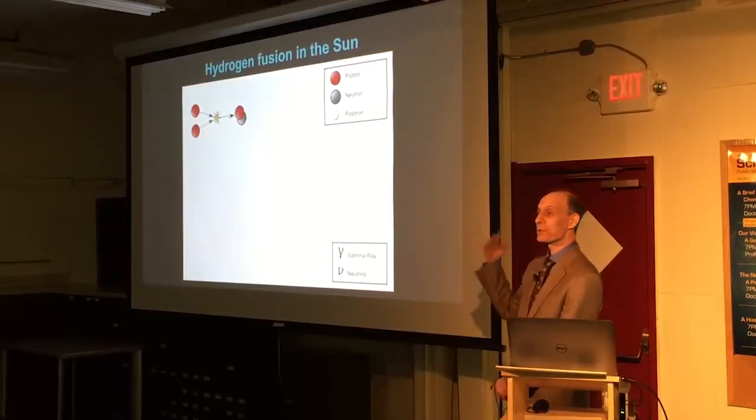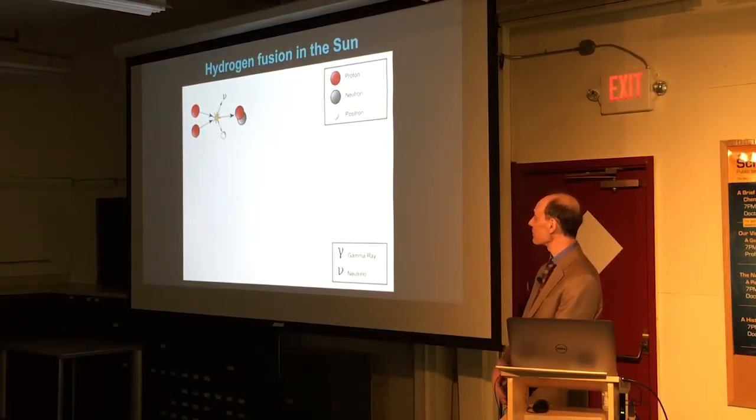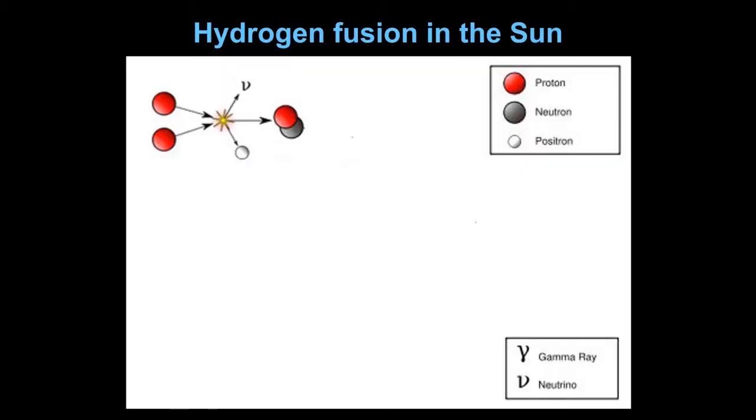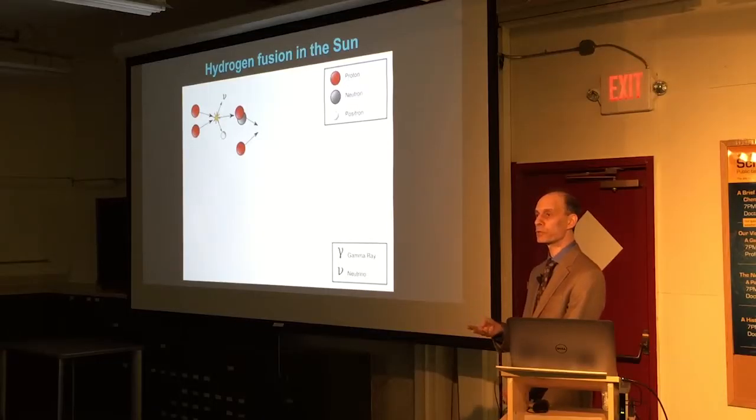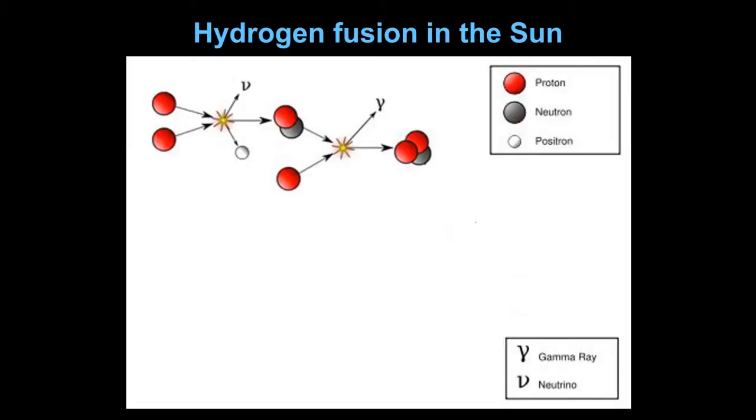Okay, so we have our deuteron and it also in the process gives off a neutrino and a positron. Positron is the antiparticle of an electron. This deuteron will react with another proton, another hydrogen nucleus, and it'll form a version of helium that's called helium-3. It has three particles in the nucleus, it has two protons and a neutron. And it gives off a gamma ray which is a high energy photon.